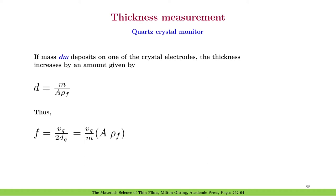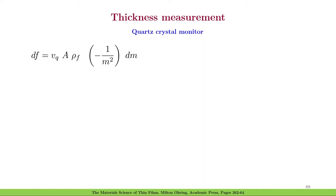When we substitute for d in the expression for f, we have f equal to vq over 2 times dq. A change in frequency due to the deposition on the crystal can be obtained by differentiating this equation with respect to m. That is df equal to vq times A times ρf times minus 1 by m squared times dm. This can be written as minus f square 2 over vq times A ρf times dm.